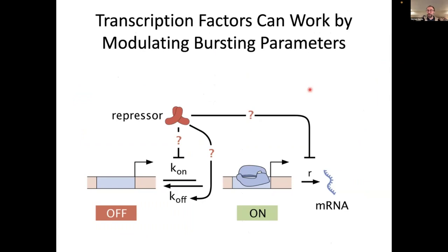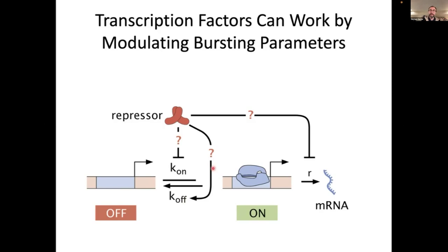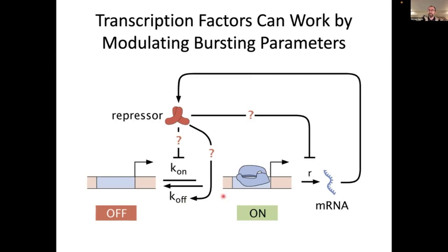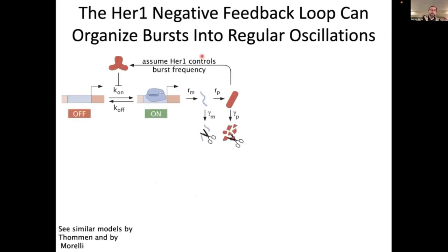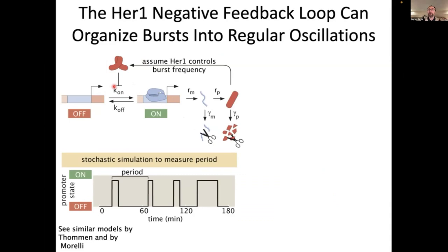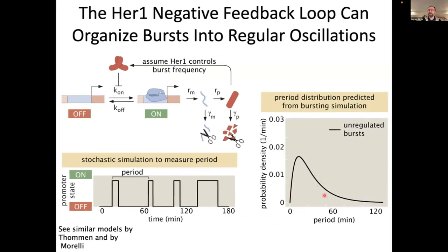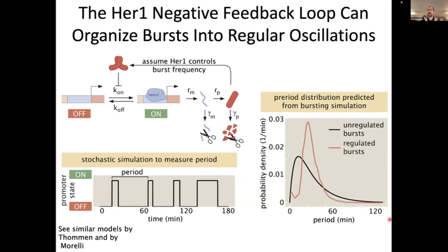But the idea is that bursting doesn't act alone — transcription factors can regulate bursting. For example, repressors can act by decreasing the burst amplitude, decreasing the burst frequency, or increasing K_off, which means making the burst duration small. Not only that, remember that the repressor can undergo feedback — this repressor feeds back into itself. What happens when we incorporate these aspects into the model? If the repressor decreases the burst frequency, you can run the simulation again and see that once you have feedback onto the burst, you can start having a narrowing of your distribution of periods.